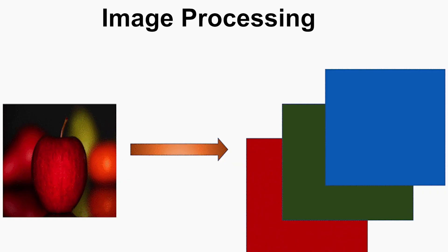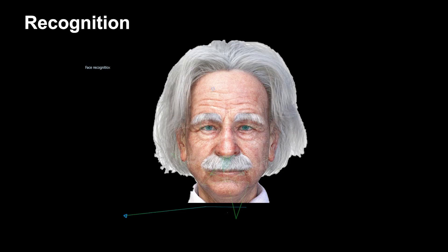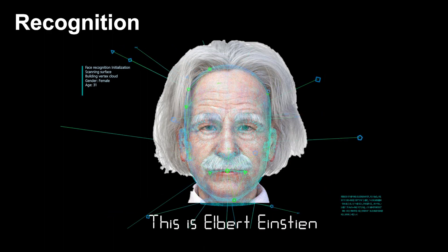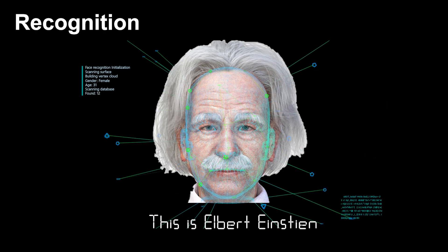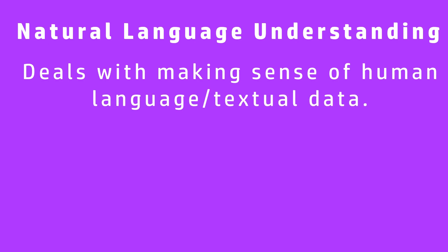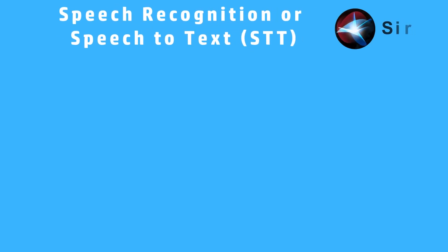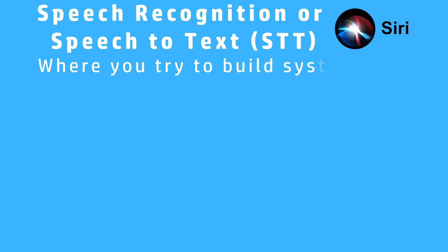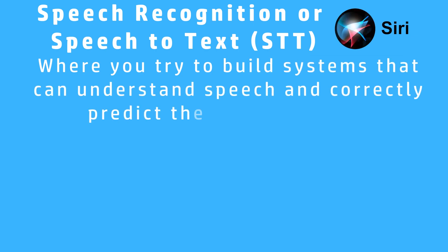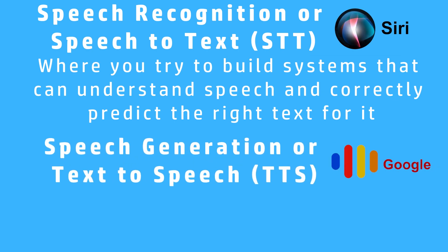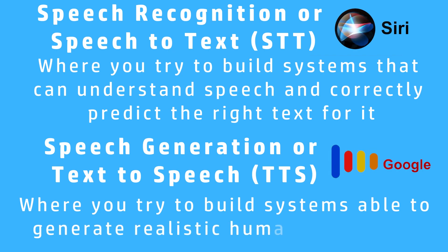Computer vision can be split into two categories: image processing, where we manipulate, process, or transform images; and recognition, where we analyze image content and make sense of it. A lot of times when people talk about computer vision, they are only referring to the recognition part. Natural language processing can be broadly split into natural language understanding, where you make sense of textual data and understand its true meaning, and natural language generation, where you try to generate meaningful text. Language translation, like in Google Translate, uses both NLU and NLG. Speech can also be divided into speech recognition (speech to text), and speech generation (text to speech), where you build systems able to generate realistic human-like speech.